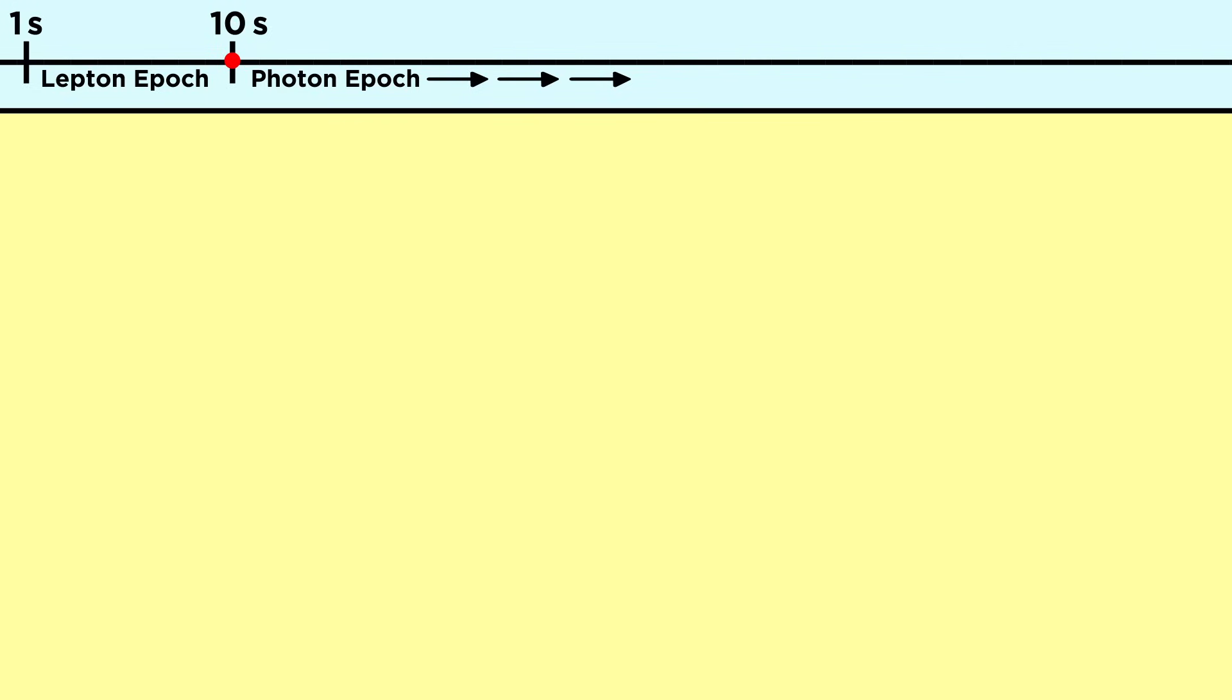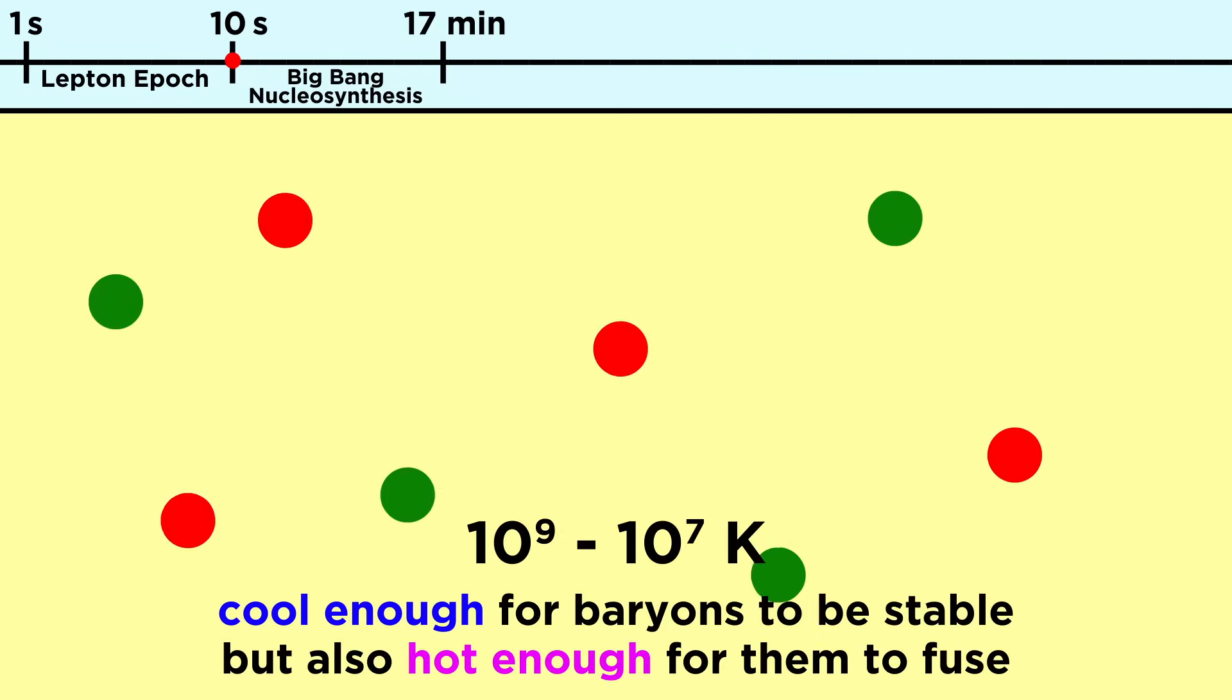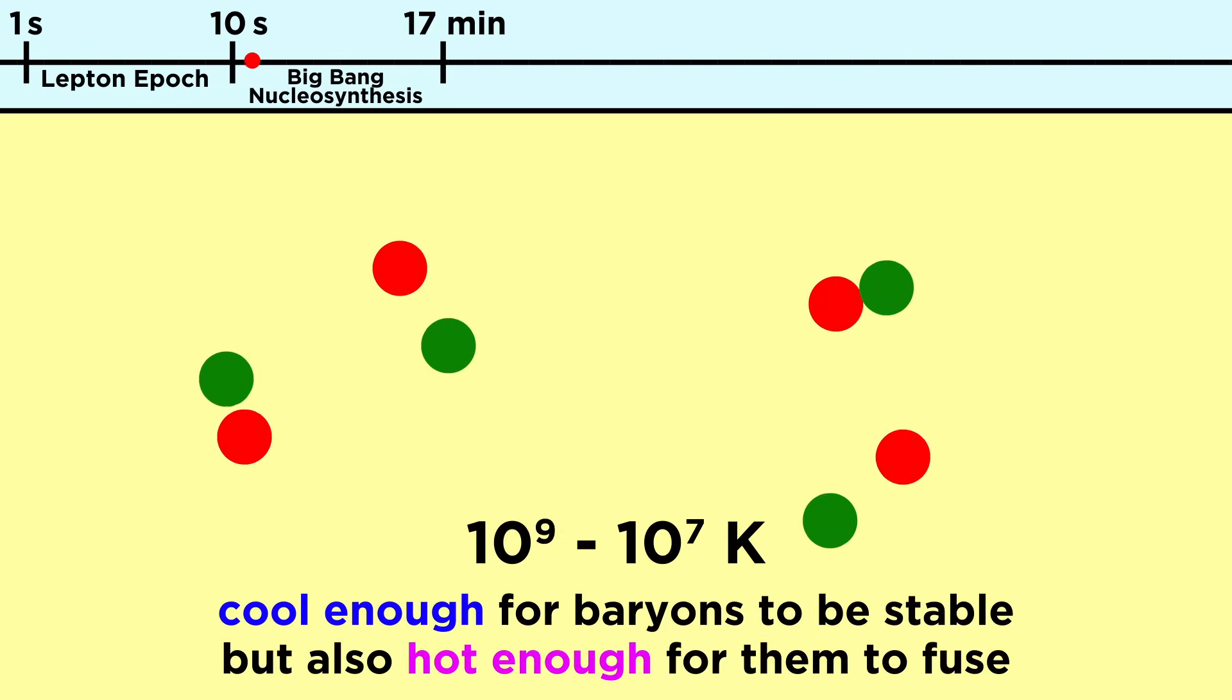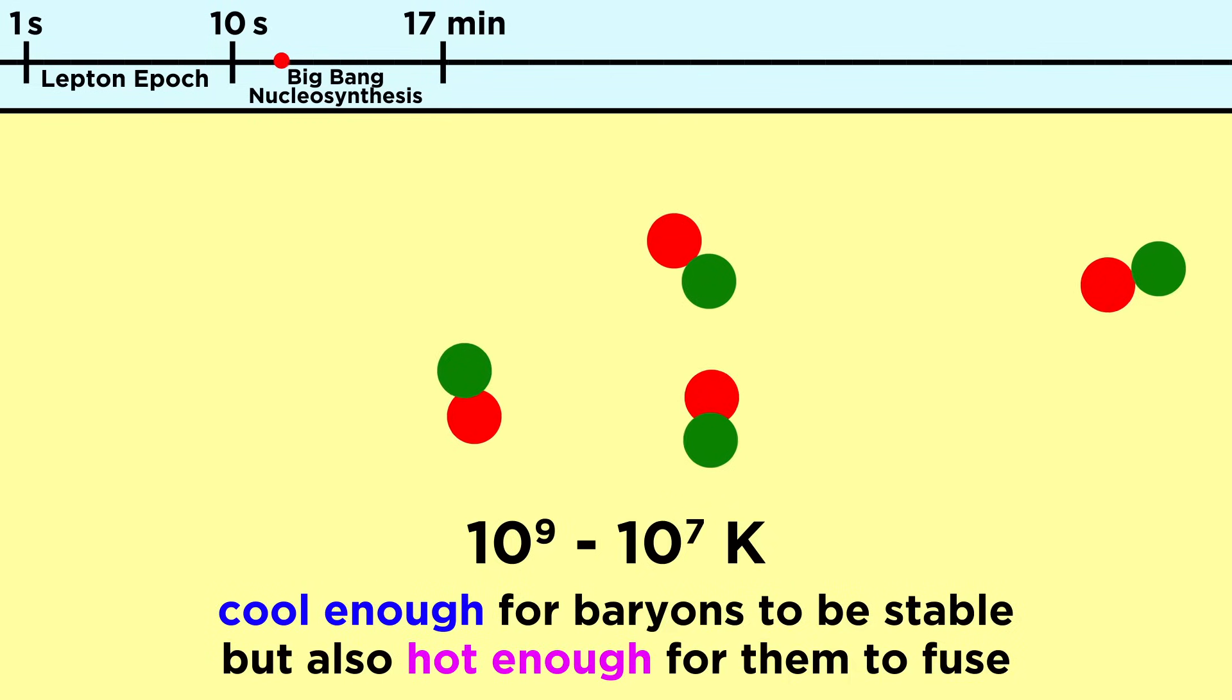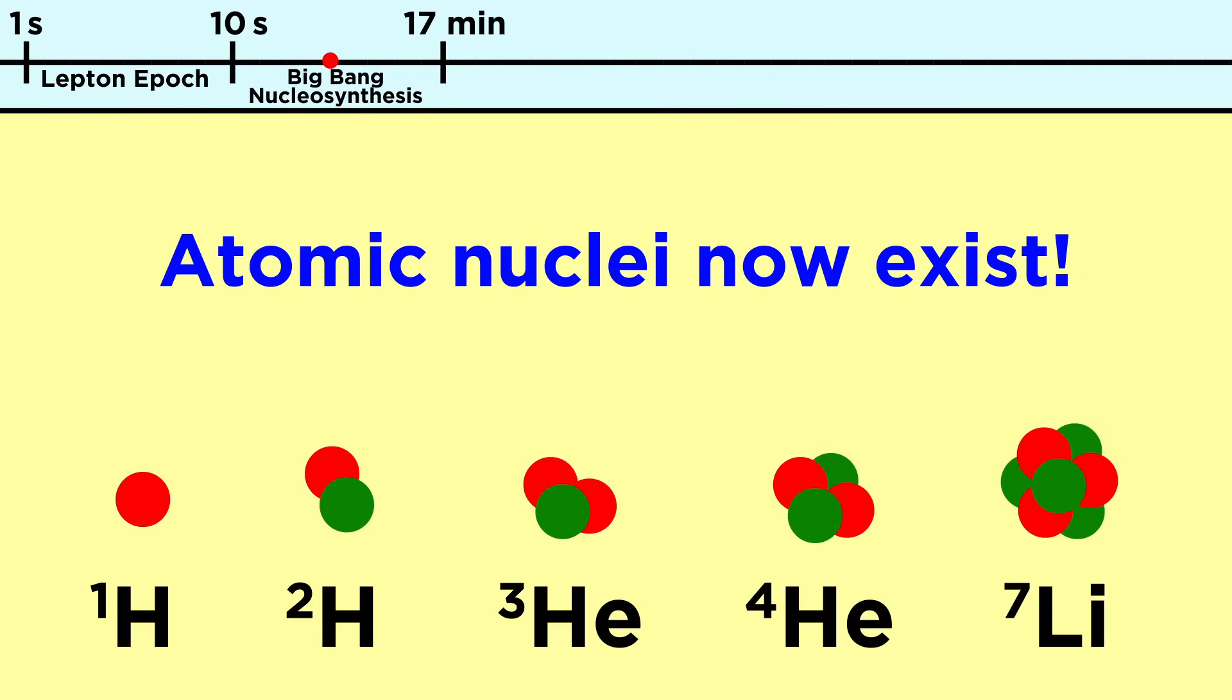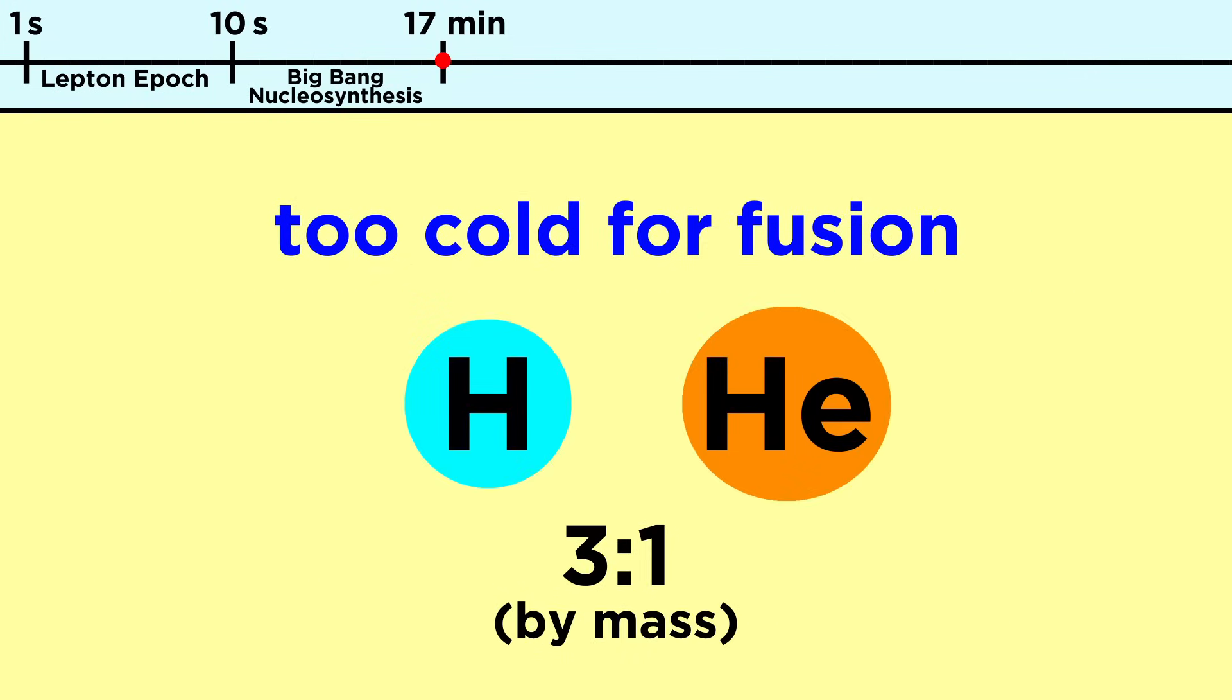From here, the start of the photon epoch, things start to look a little more familiar. For about seventeen minutes, the universe is cool enough for baryons to be stable, but also hot enough for them to fuse. So protons and neutrons fuse together to make lots of hydrogen and helium, and trace amounts of other light nuclei, an era called Big Bang nucleosynthesis. After that, it gets too cold and sparse, so fusion halts, locking the universe into a three to one ratio of hydrogen to helium by mass.